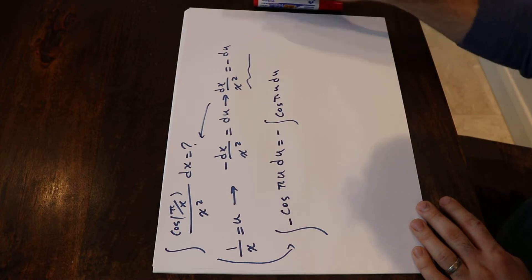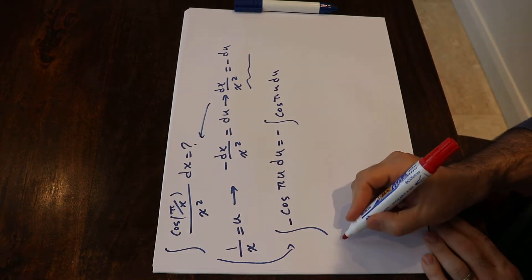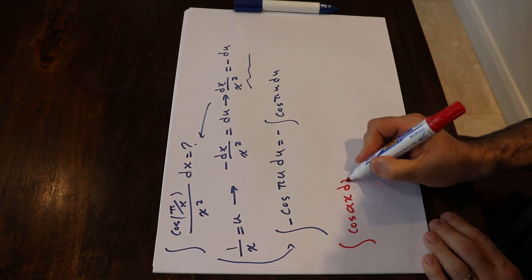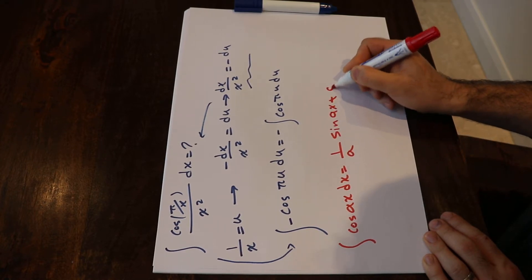To solve this integral you need to know one formula: the integral of cosine ax dx is equal to 1 divided by a sin ax plus c.